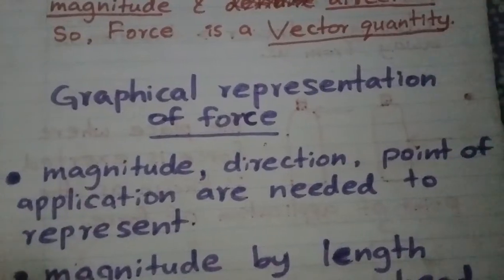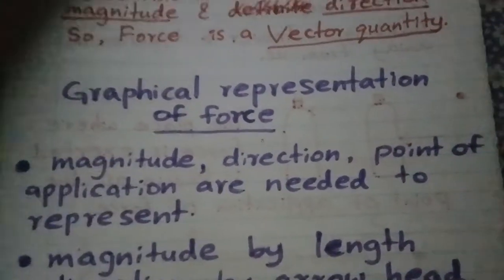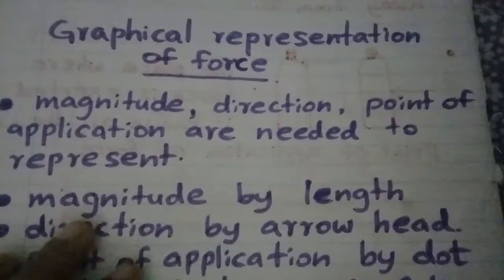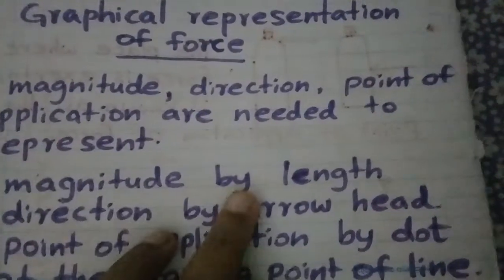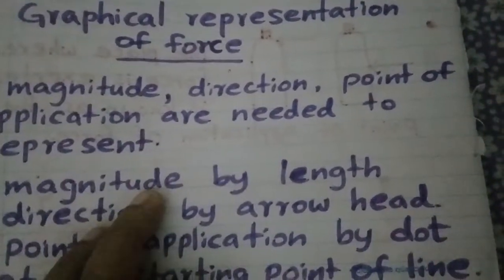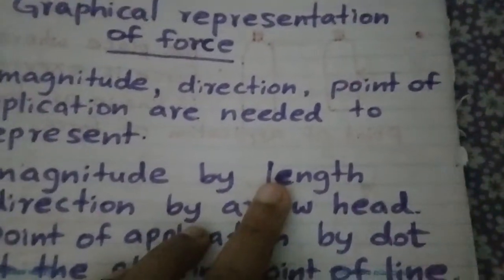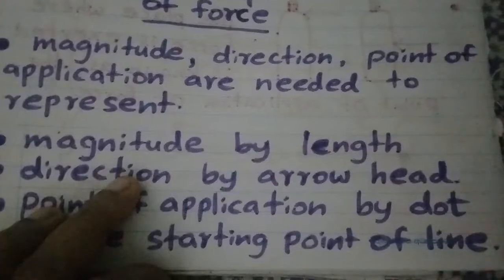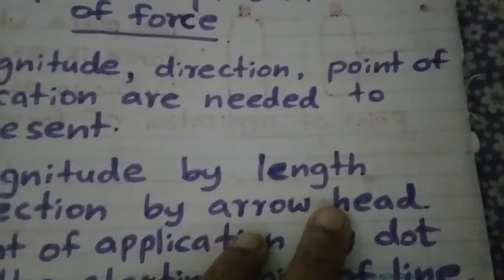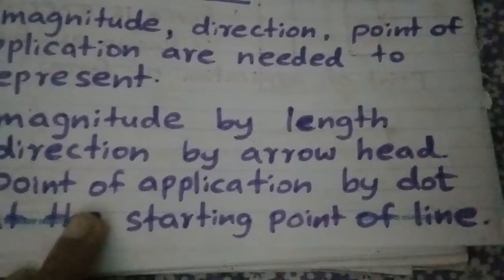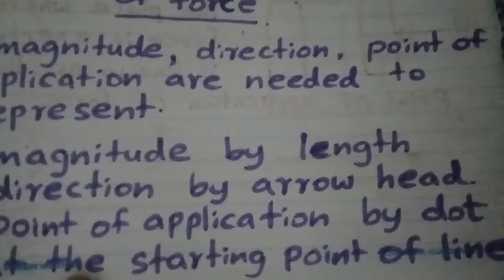How do you represent each characteristic? Magnitude is shown by the length of the line you draw. Direction is shown by placing an arrowhead on the line. The point of application is shown by a dot at the starting point of the line.